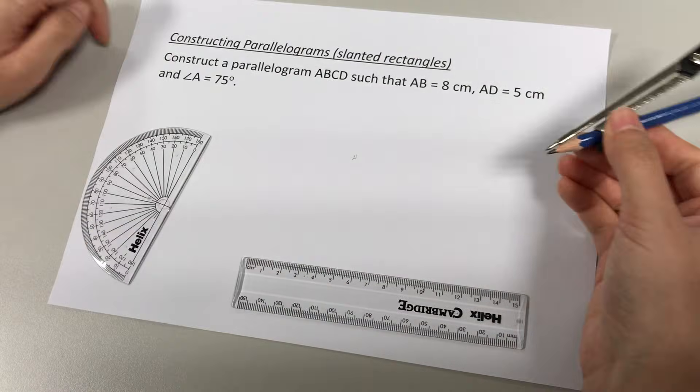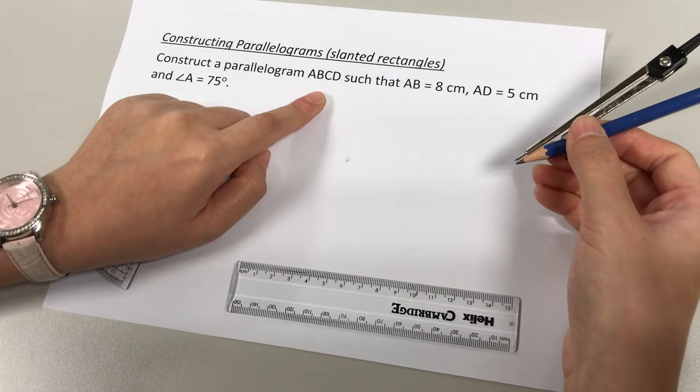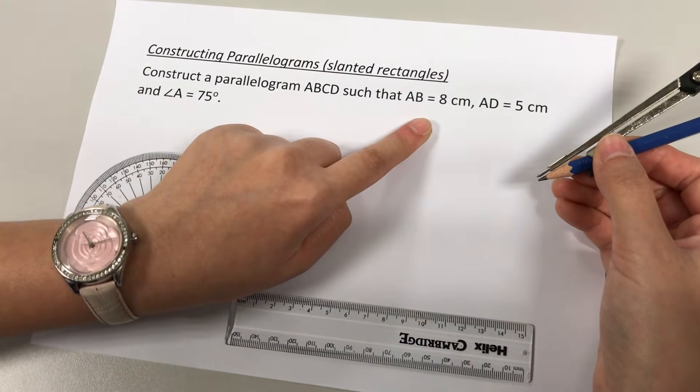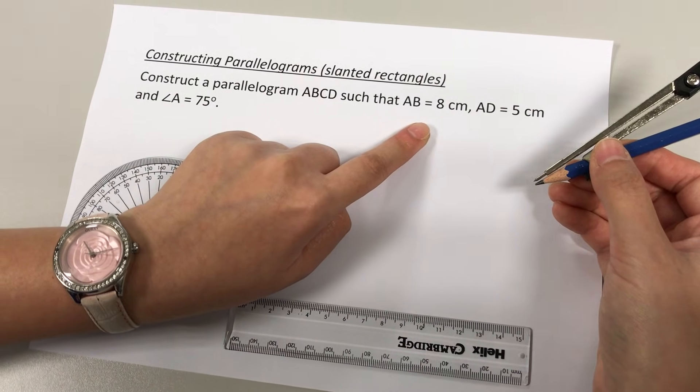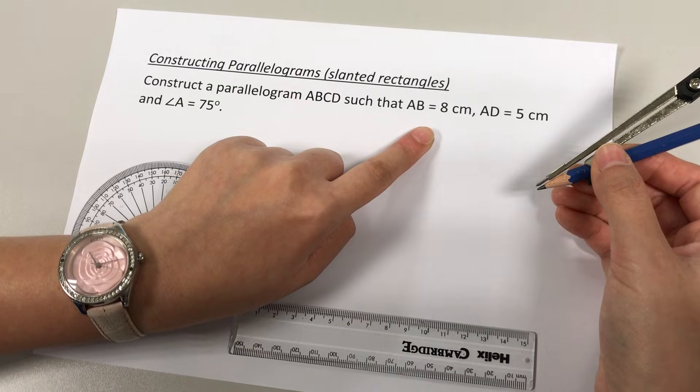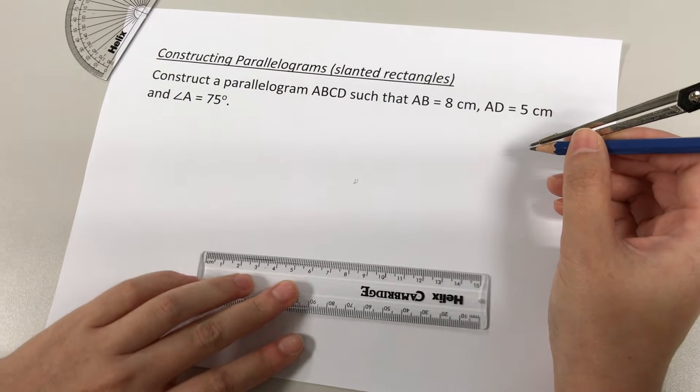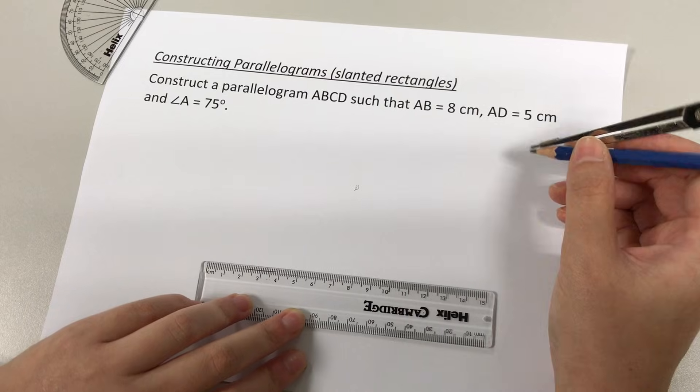Now we are ready to draw a parallelogram ABCD. Let's start with the first information given that AB is 8 cm. So just like how you draw a triangle, the first step is always to use your ruler to start off with drawing a straight line.